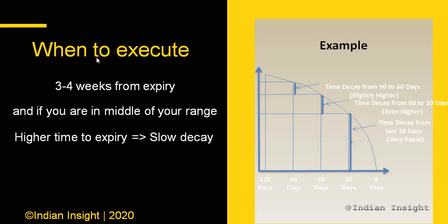When should you execute short strangles? Theta decay is fastest in the last 30 days and accelerates in the last 3 weeks. So when you are 3 to 4 weeks away from expiry, and the stock price is in the middle of your expected range, it would be a good time to execute your trade. If you enter with a higher time to expiry, the decay will be slow, and the longer you wait, the higher the odds of a swift major movement in the stock.